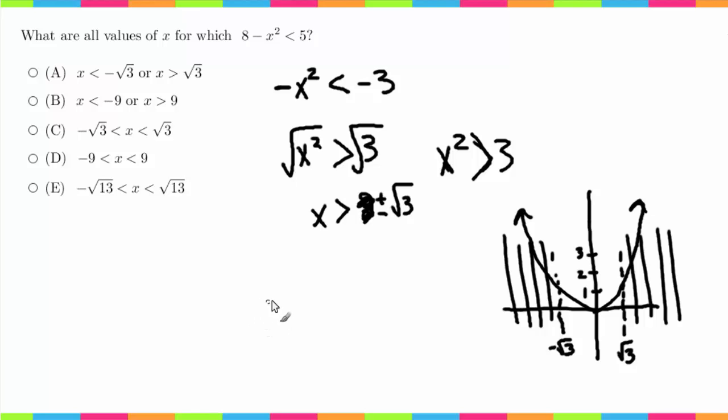So what you have to do instead is you have to set up a number line. And you have to break apart. So you have rad 3 and then you have negative rad 3. This is 0. And then you have to pick a point in each one of these areas. So this area, or here I'll start on. This area, this area, and this area. And check each one.